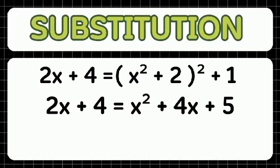after we expand the squared term on the right side, we will simplify the equation. So the equation will be 2x plus 4 equals x squared plus 4x plus 5.